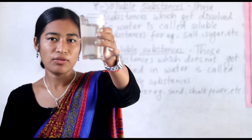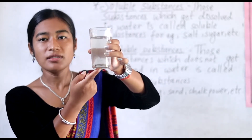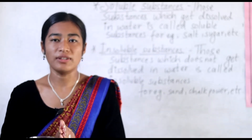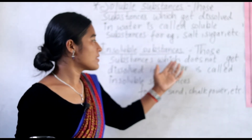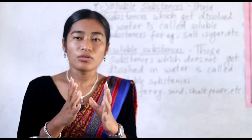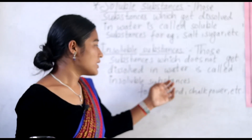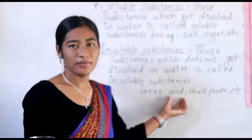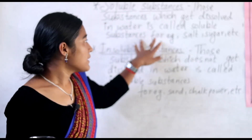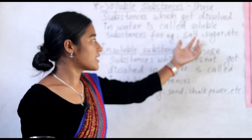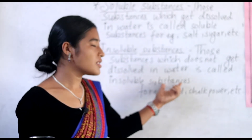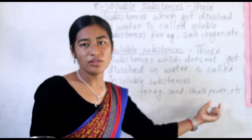What did you see? The sand does not get dissolved in water. So sand is an insoluble substance. Insoluble substances are those substances which do not get dissolved in water. For example, sand and chalk powder. So to summarize: those which get dissolved in water are soluble substances — for example, salt and sugar — and those which do not get dissolved in water are insoluble substances — for example, sand and chalk powder.